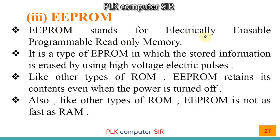EEPROM stands for Electrically Erasable Programmable Read-Only Memory. It is a type of EPROM in which the stored information is erased by using high-voltage electric pulses. In normal EPROM we use ultraviolet light, but in EEPROM we erase data using high-voltage electric pulses. Like other types of ROM, EEPROM retains its contents even when power is off — so it is permanent memory. Also, like other types of ROM, EEPROM is not as fast as RAM.